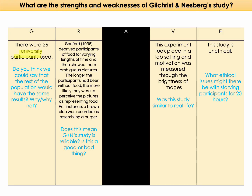The fact that they only used university participants and only 26 is a small sample, which can affect the results — you can't generalise that everybody would behave the same. There is also a study by Samford, which found very similar findings: people perceived a brown blob as a burger after going without food, making Gilchrist and Nesberg's study more reliable. However, the experiment took place in a lab setting and motivation was measured through brightness of images, which has nothing to do with real life — so it lacks ecological validity and is a poor way to measure motivation.